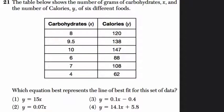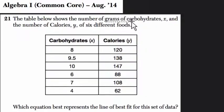Let's start by reading the problem together. It tells us that the table below shows the number of grams of carbohydrates, X, so X is our carbohydrates right here, that's our independent variable, and the number of calories, Y, of six different foods.